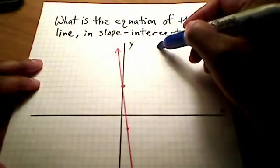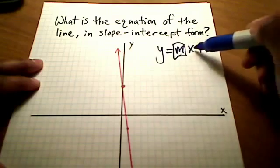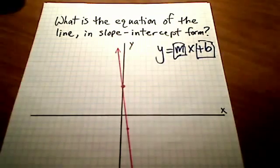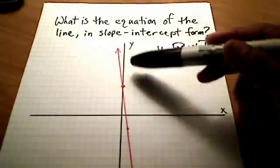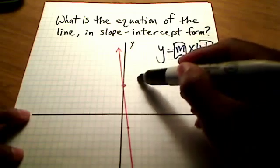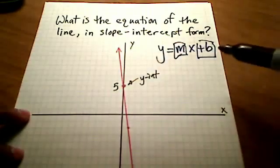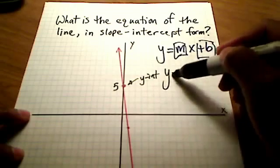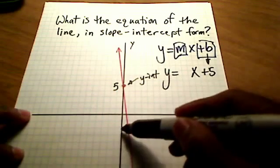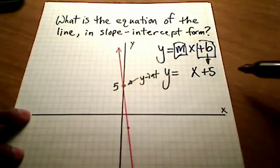Well, slope-intercept form always starts off like this, where y is all by itself. We have this thing in front of the x called the slope. And we have this thing over here all by itself, a constant, which is where it crosses the y-axis. So let's start with that. Where does this red line that I have here cross the y-axis? Well, I hope you see it crosses the y-axis right here. This is the y-intercept. And in my case, it's 1, 2, 3, 4, 5. That's a positive 5. So I know that this number sitting here all by itself is a positive 5. If it crossed down here somewhere, it would be a negative number. But since it's crossing right here, it's a positive 5. So I'm just going to put a plus 5.